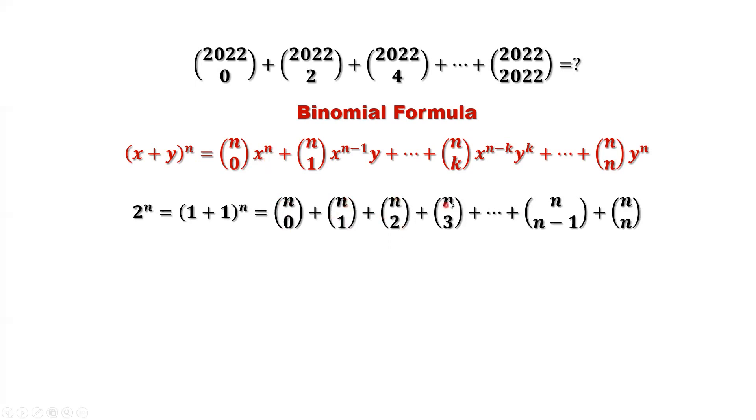We only have n pick 0, n pick 1, n pick 2, n pick 3 until n pick n. Those numbers are Pascal triangle numbers.